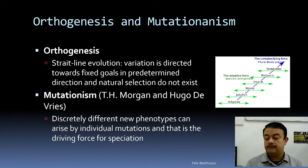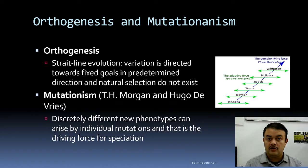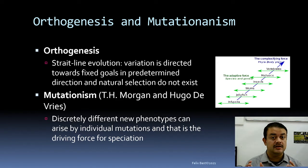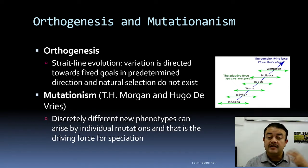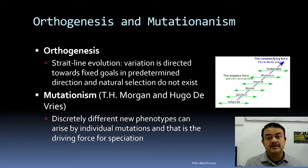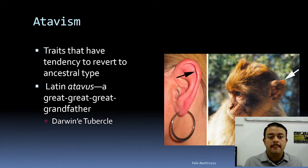Mutationism is a term associated especially with Thomas Hunt Morgan and Hugo de Vries, who did extensive work on genetics and Drosophila melanogaster. According to them, mutation alone is the reason new phenotypes arise — natural selection and genetic drift play no role. This is also a wrong concept; mutation alone is not the driving force for speciation.